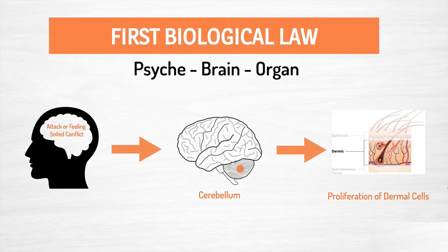The first biological law states that at the moment of a conflict — the moment your psyche perceives an attack or a feeling-soiled conflict — it is immediately registered in the cerebellum at the area I showed you before. Immediately the program is set off, the biological special program of the dermis begins, which is proliferation. It's a protective shield, a barrier — it is adding additional cells for your protection against this attack or soiling that you have perceived.